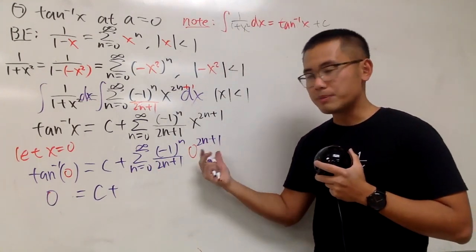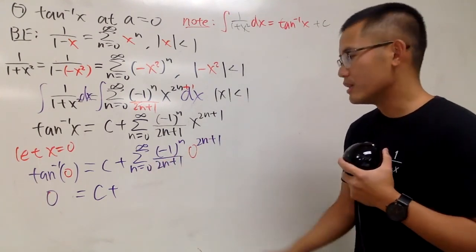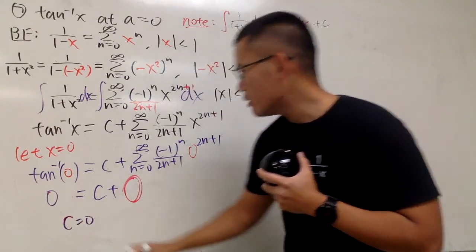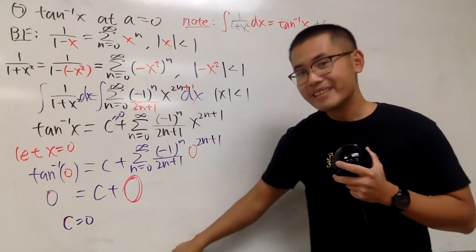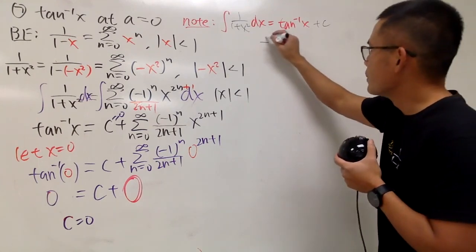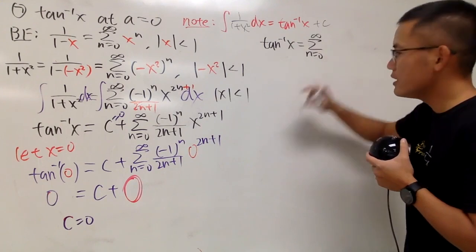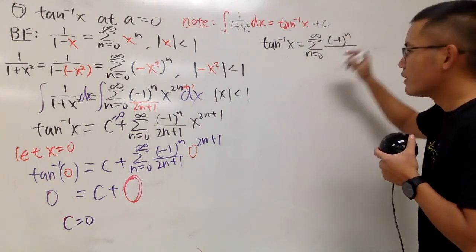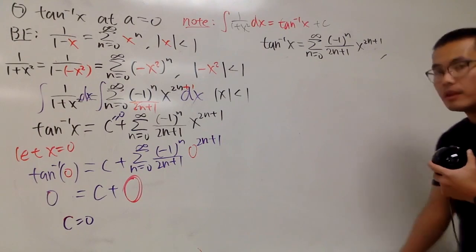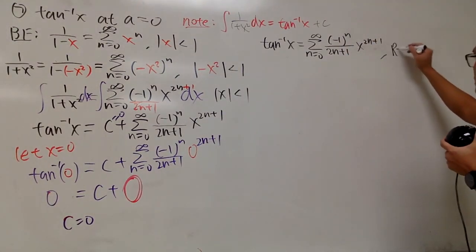When n equals 0, the first term is 0 to the first power times all that, which is 0. Likewise, the next term when n is 1 gives 0, and so on — so you get 0 for this series. In other words, C equals 0. That means this term is equal to 0.